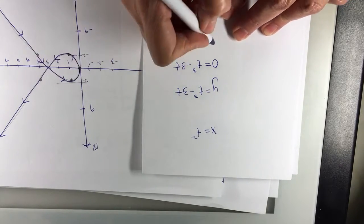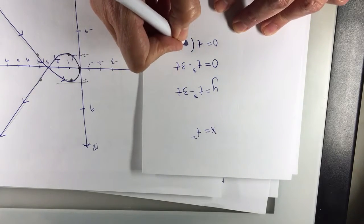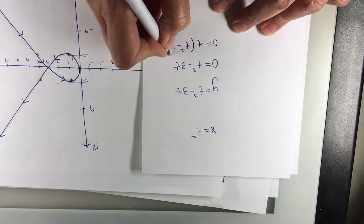Let's factor a t out. So t factors out, and then that's going to be t squared minus 3.